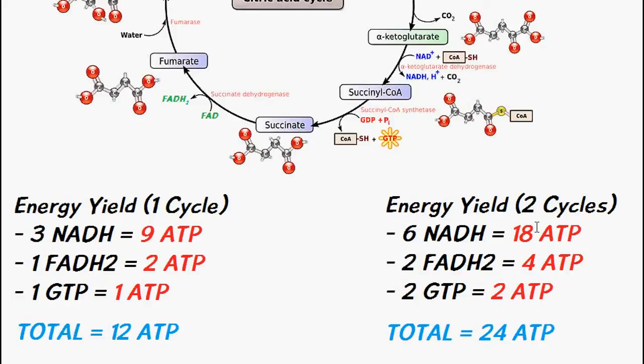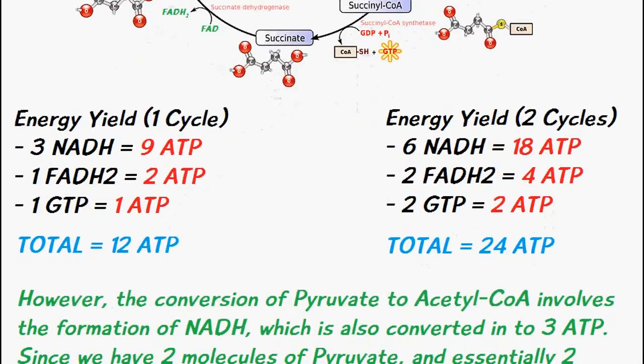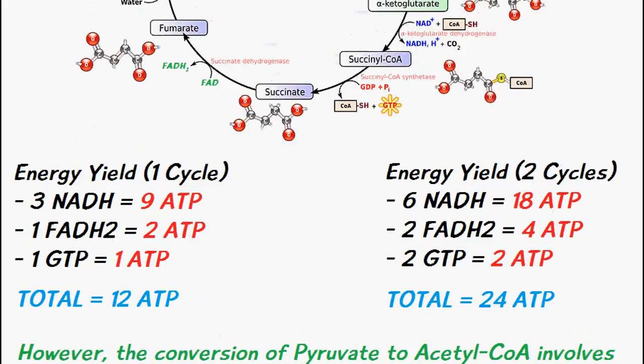So since the cycle goes around twice we can double this number and then we'll get 24 ATP which is produced from two spins of the citric acid cycle.